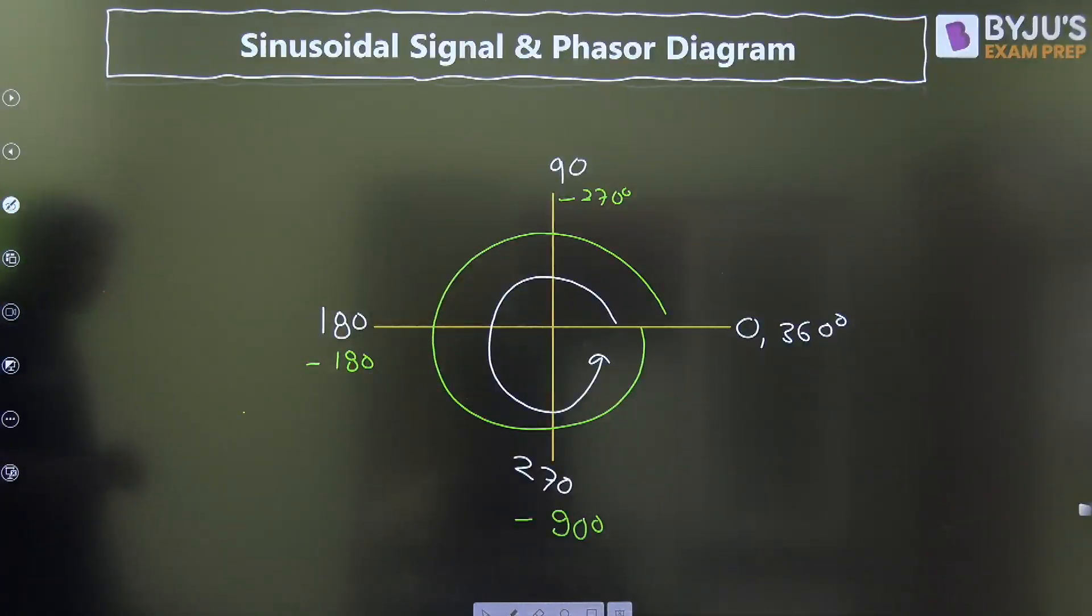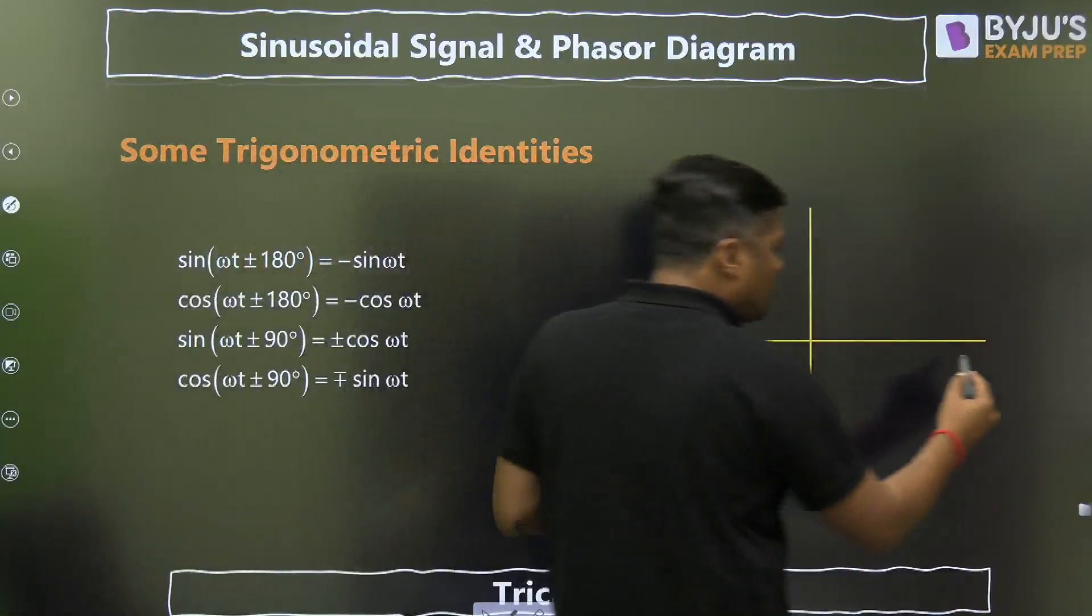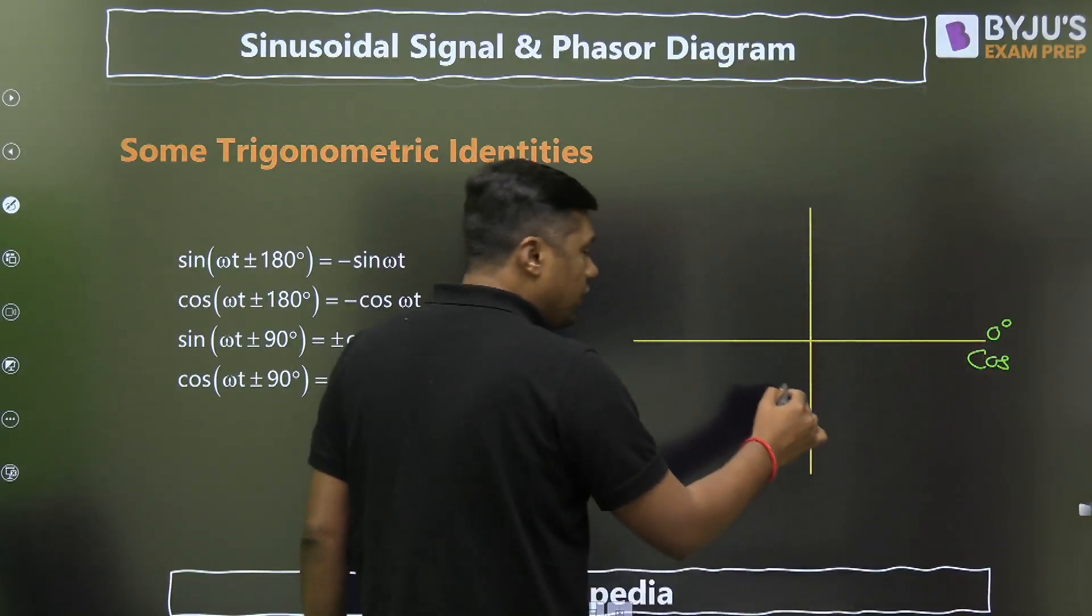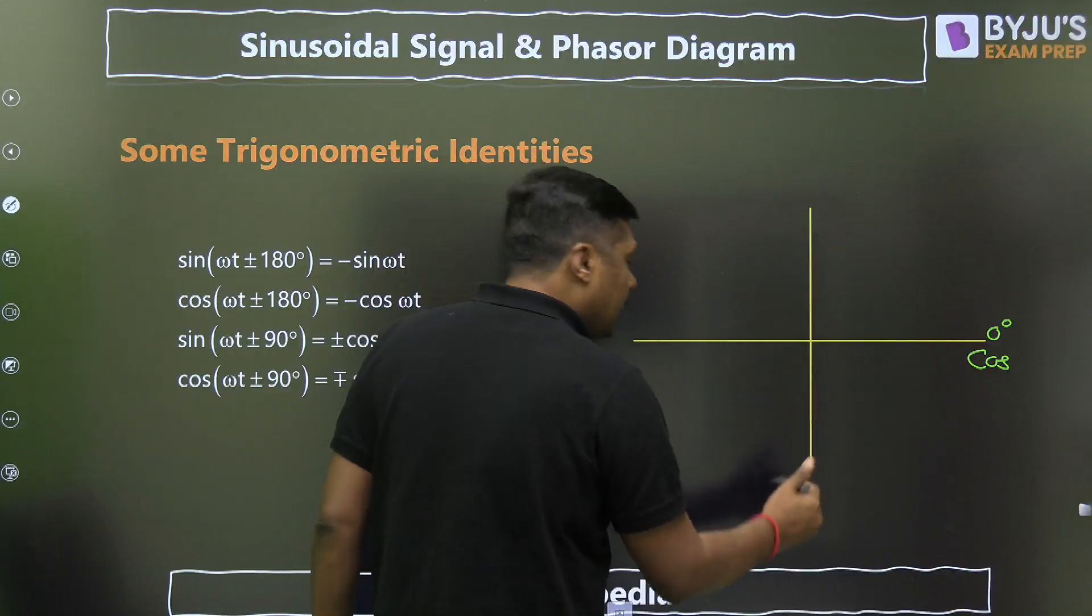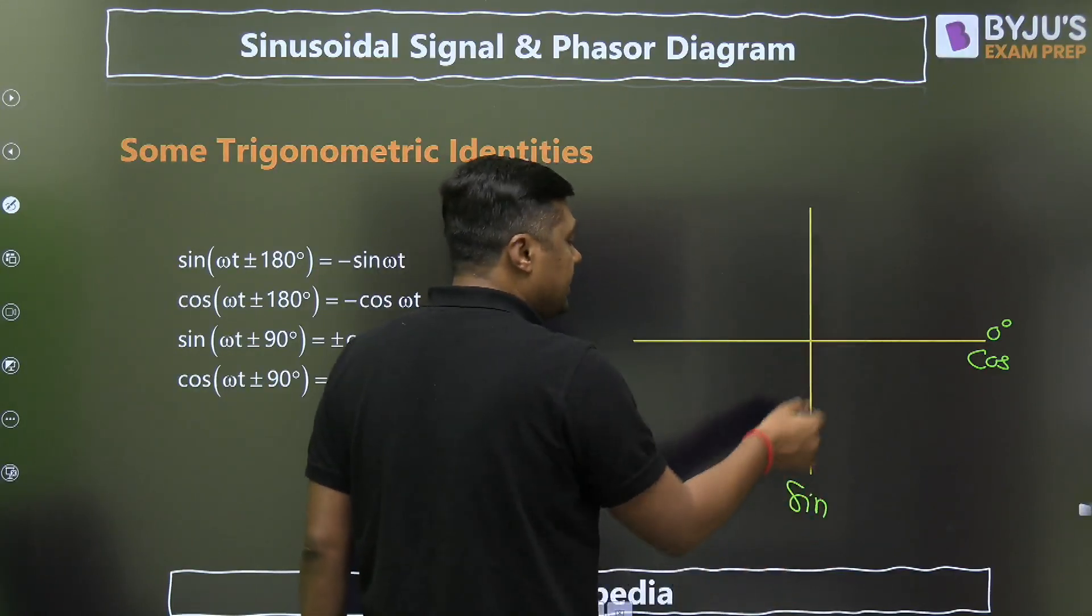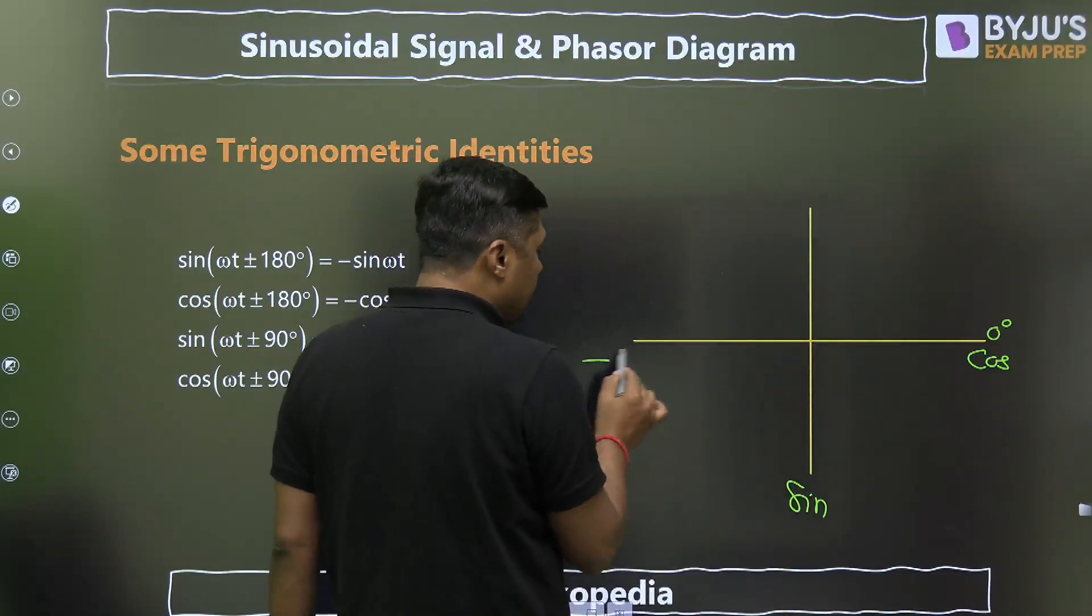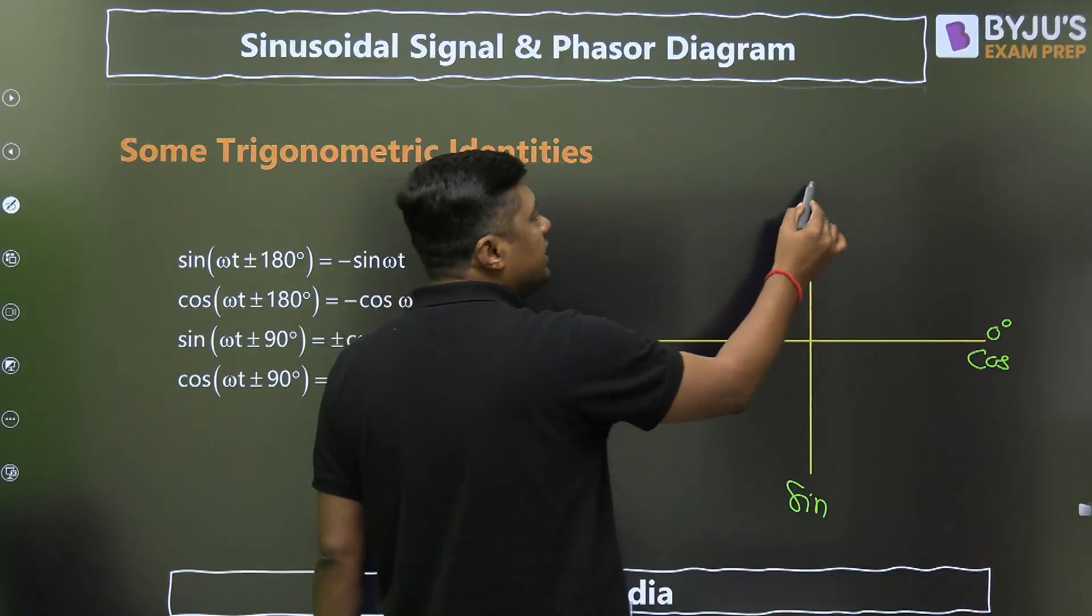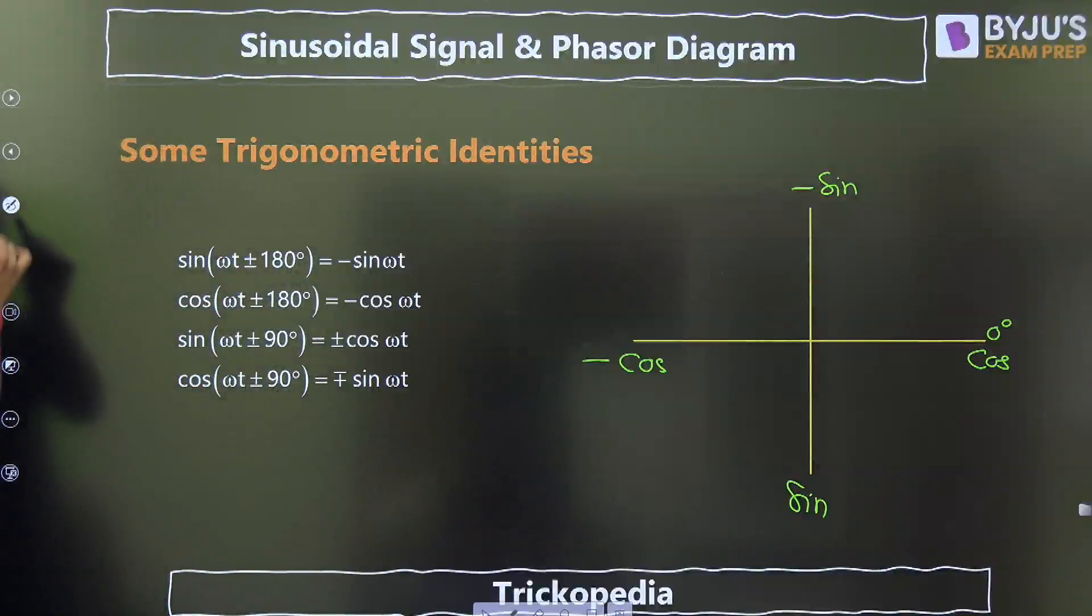Then trigonometric identities. Remember, if suppose we are taking cos this 0 degree as cos, then when we are giving the 90 degree minus, that is lagging, it will become sine. Because cos of θ minus 90 degrees is sine. And then when we are giving the 180 degree phase shift, it will become minus cos. Sine of θ plus minus 180 degrees is minus sine. And that is already I have given here. So this is the values.